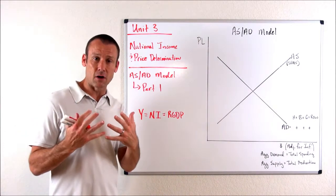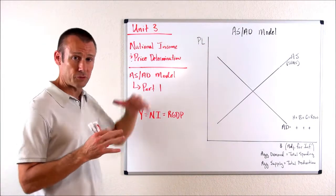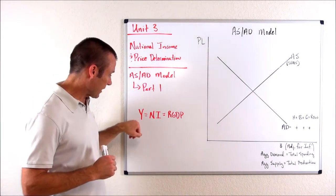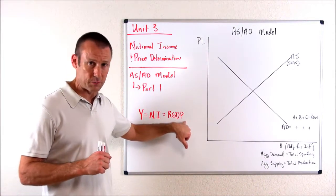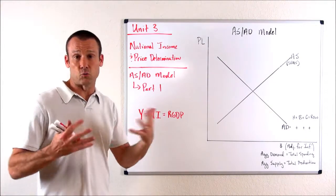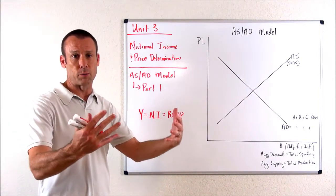First thing I want to talk about when we enter this unit, unit three right here, is that we've got this thing called Y equals national income (NI) equals real GDP. Remember, real GDP is what we produce. It's the total value of what we produce.